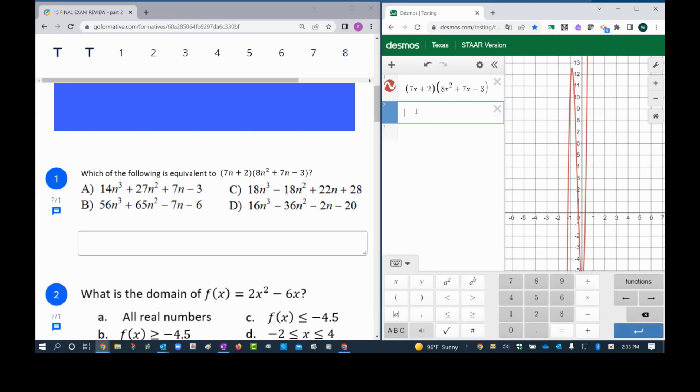I'm going to try to enter the multiple choices, so x cubed plus 27x squared plus 7x minus 3. If you notice right there that produced the wrong graph, so I know the first multiple choice is wrong.